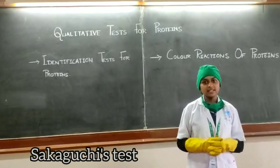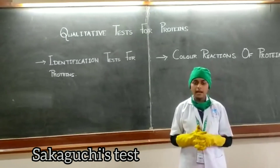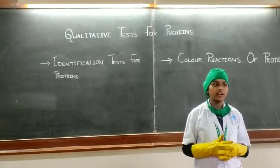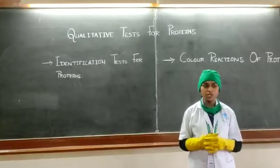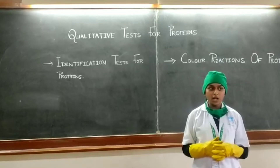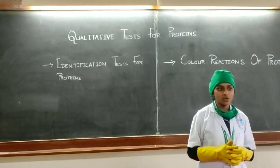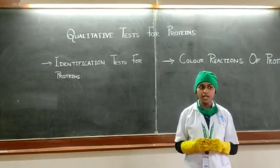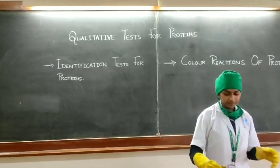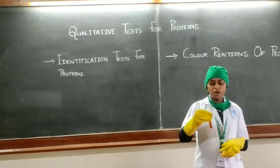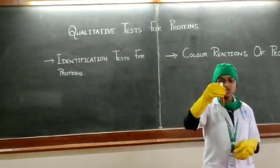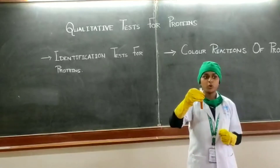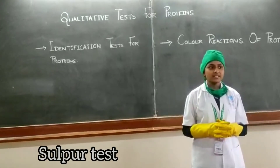Sakaguchi test: 2 ml of sample solution plus 2 drops of alpha-naphthol solution plus 2 ml of NaOH solution. Mix well. Add 2 drops of sodium hypobromide. By performing it, appearance of a red color indicates that arginine-containing protein may be present.